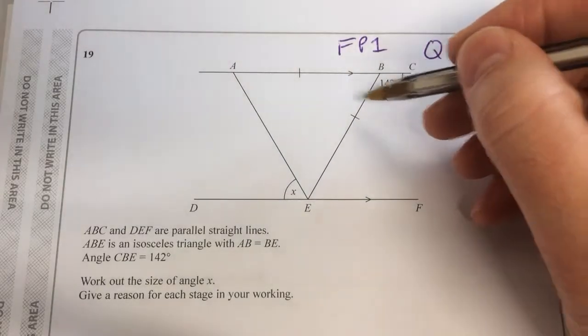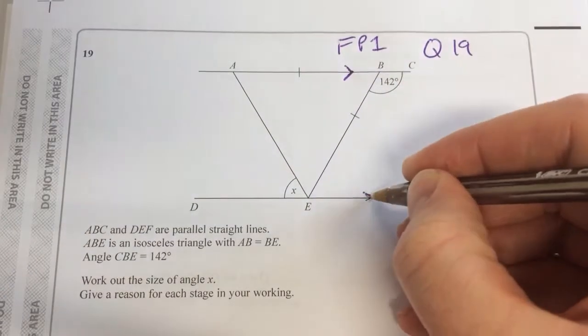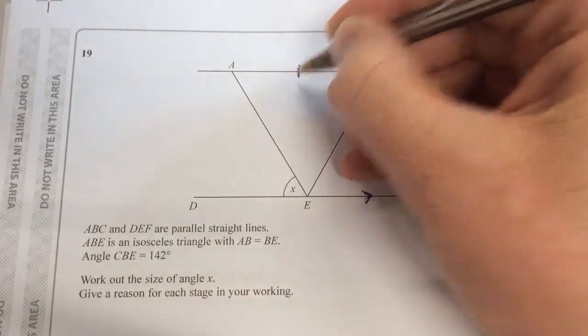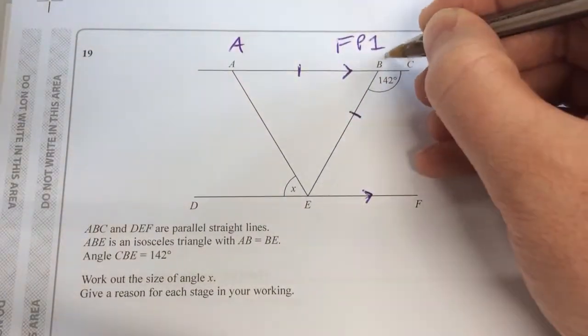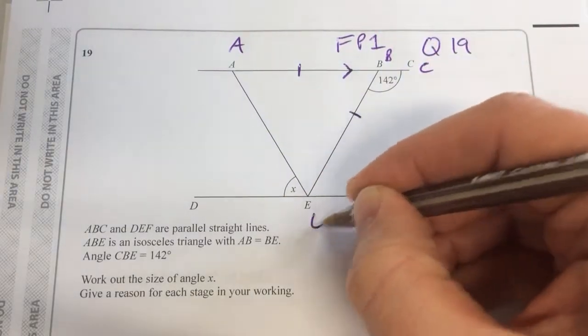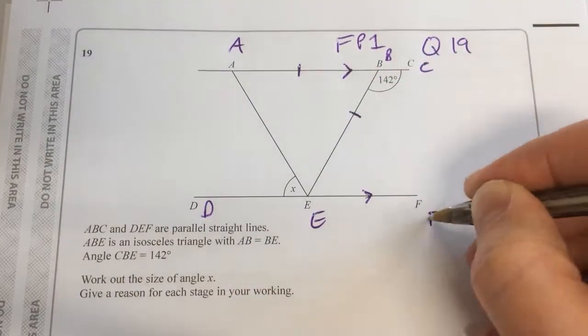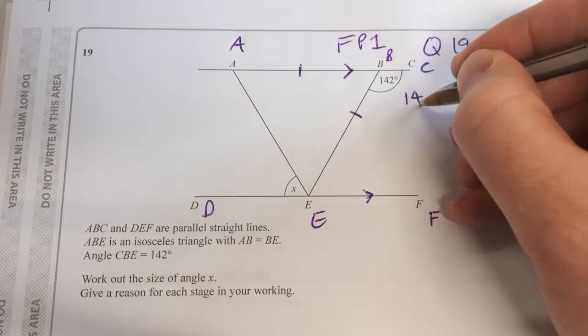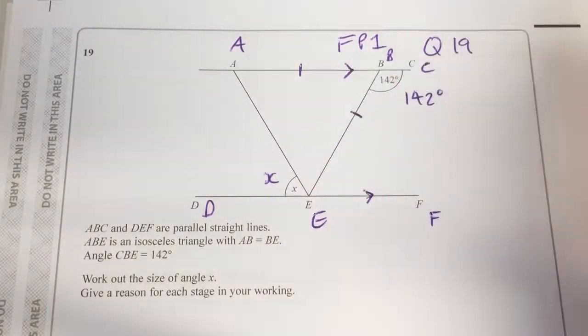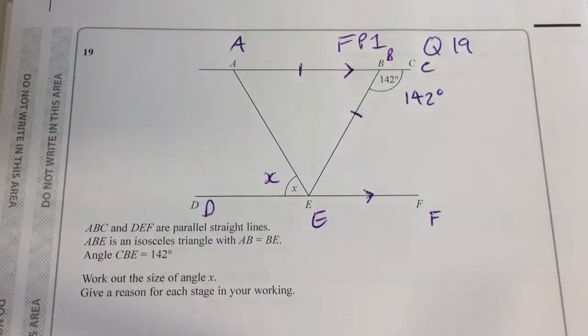We've got some lines with some arrows on them. We've got some lines with some marks on them. We've got the points A, B, and C, D, E, and F. That angle there is 142. And X is what we've been asked for, and we've got to give reasons.